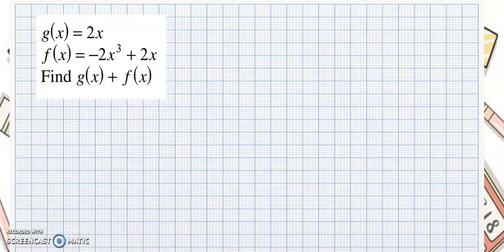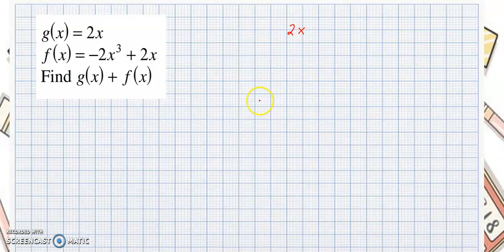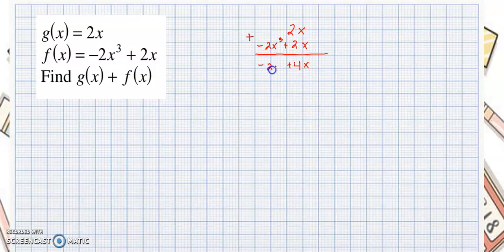Let's have an example. We have g of x equal to 2x, and f of x equal to negative 2x cubed plus 2x. We wanted to know what is g of x plus f of x. We know that g of x is 2x and f of x is negative 2x cubed plus 2x. If you want to add vertically, you just need to align the like terms. So this would be negative 2x cubed plus 2x. Then we add them up: 2x plus 2x is 4x positive. Then we bring down negative 2x cubed.